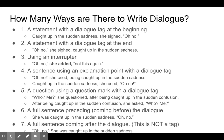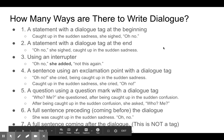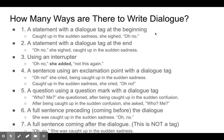How many ways are there to write dialogue? Lots of them. I thought of seven different ways and gave you examples: a statement with a dialogue tag at the beginning, dialogue tag at the end, an interrupter, exclamation points, question marks, and sentences that are not necessarily dialogue tags. Please take a look at this because I'm going to ask you for some examples on the next slide. Pause the video and read through the seven different examples now.